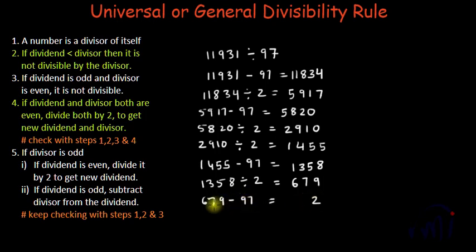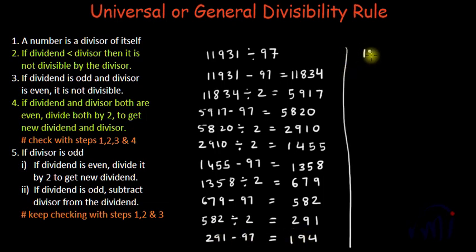9 minus 7 is 2, 17 minus 9 is 8, giving 582. Divide by 2: we get 291. This is odd, so subtract 97: 11 minus 7 is 4, 18 minus 9 is 9, giving 194. This is even, so divide by 2.